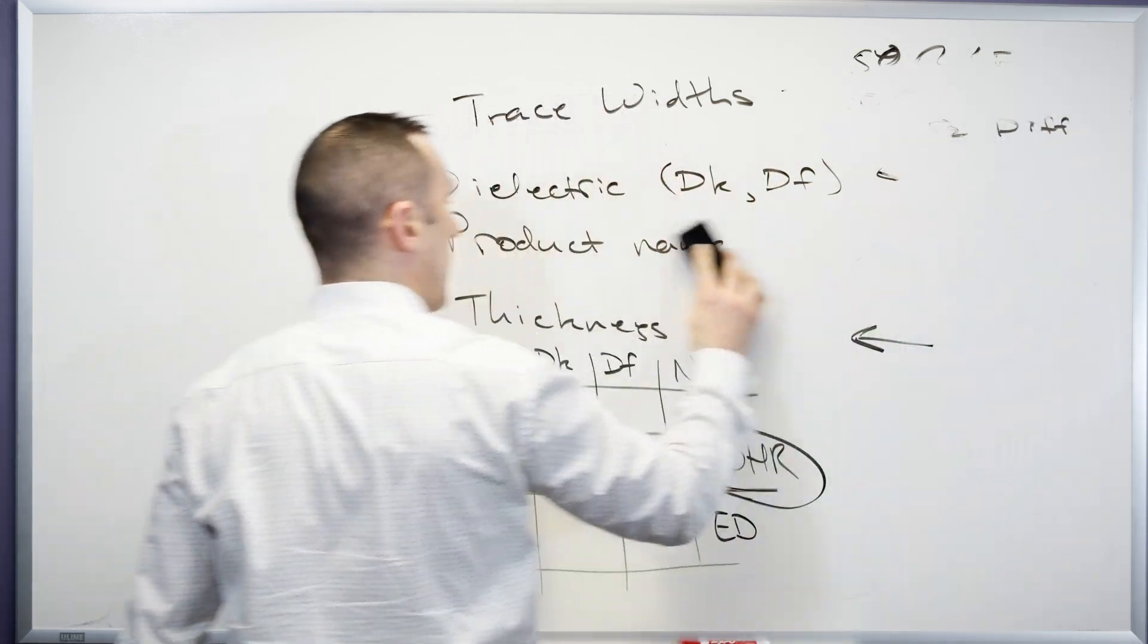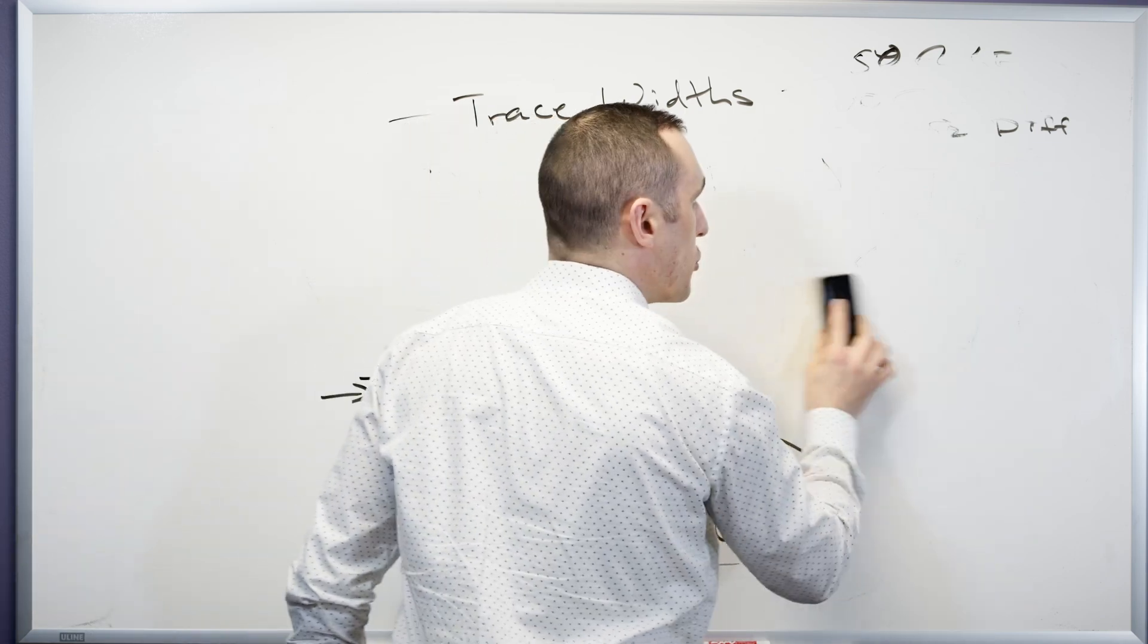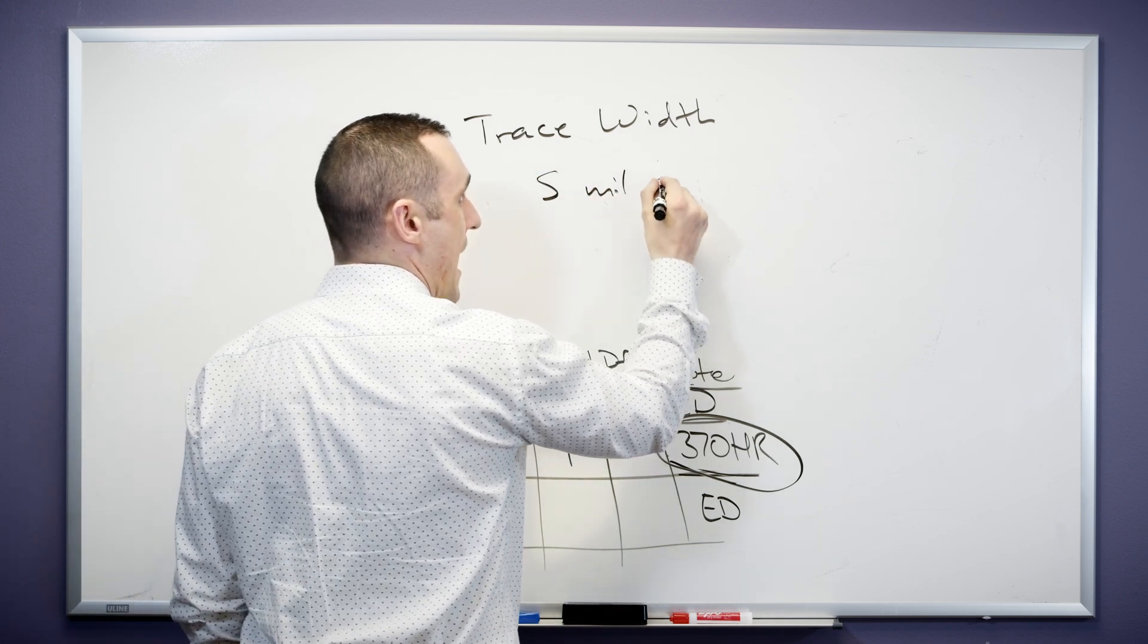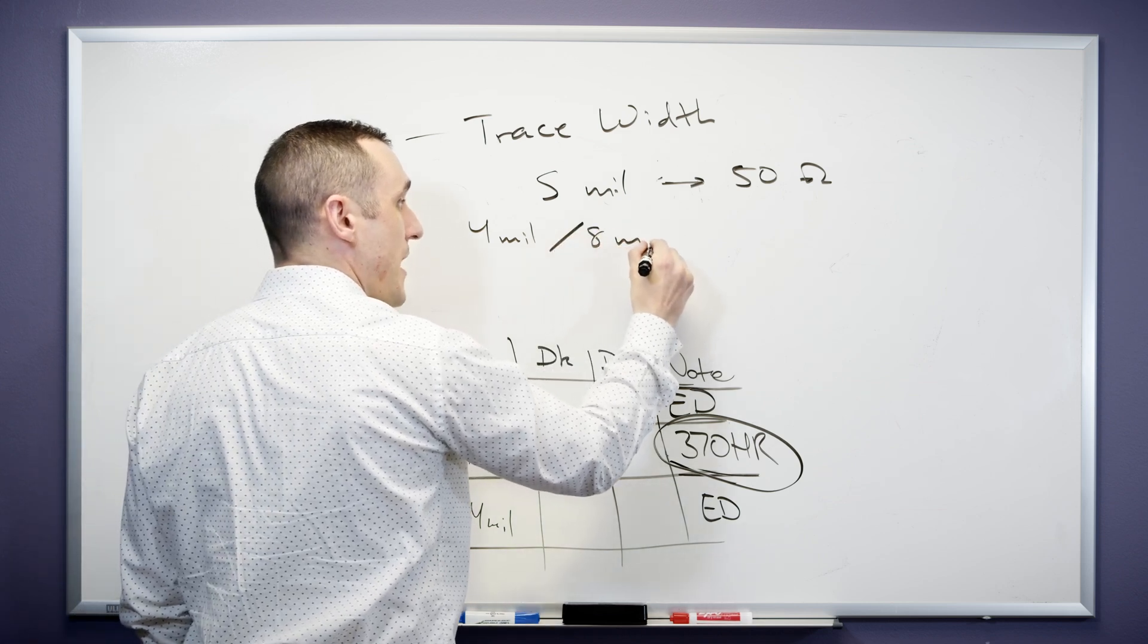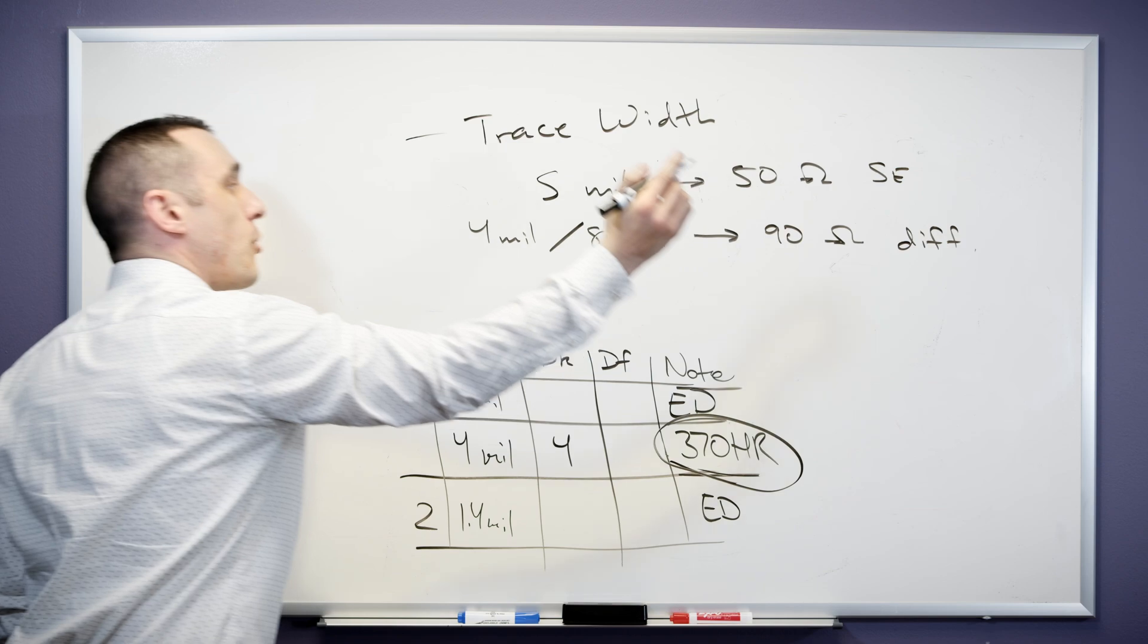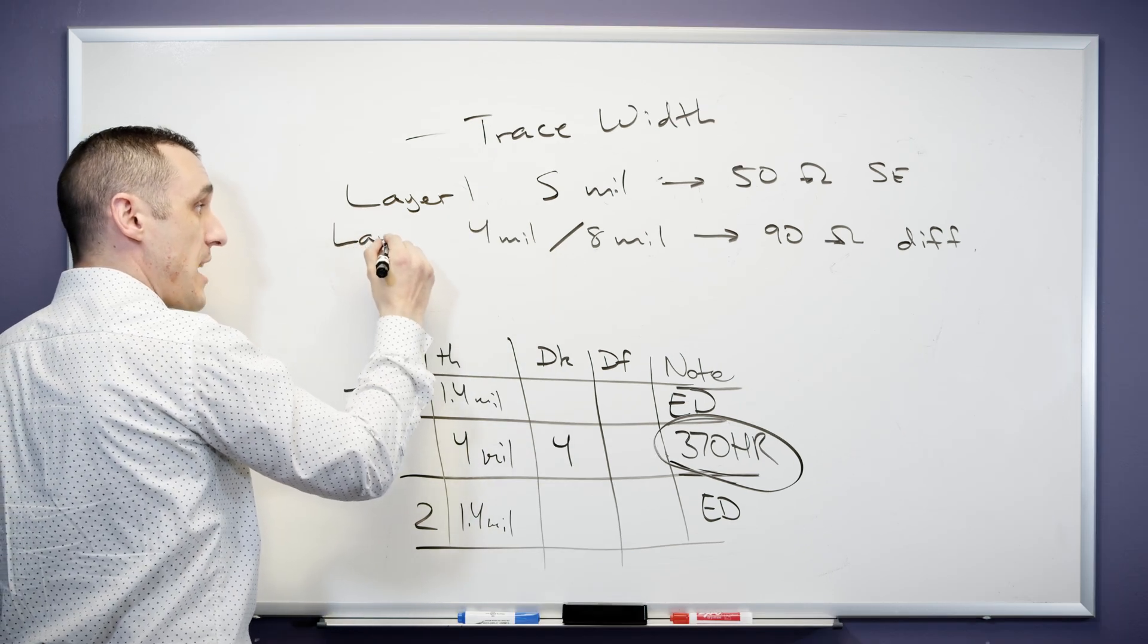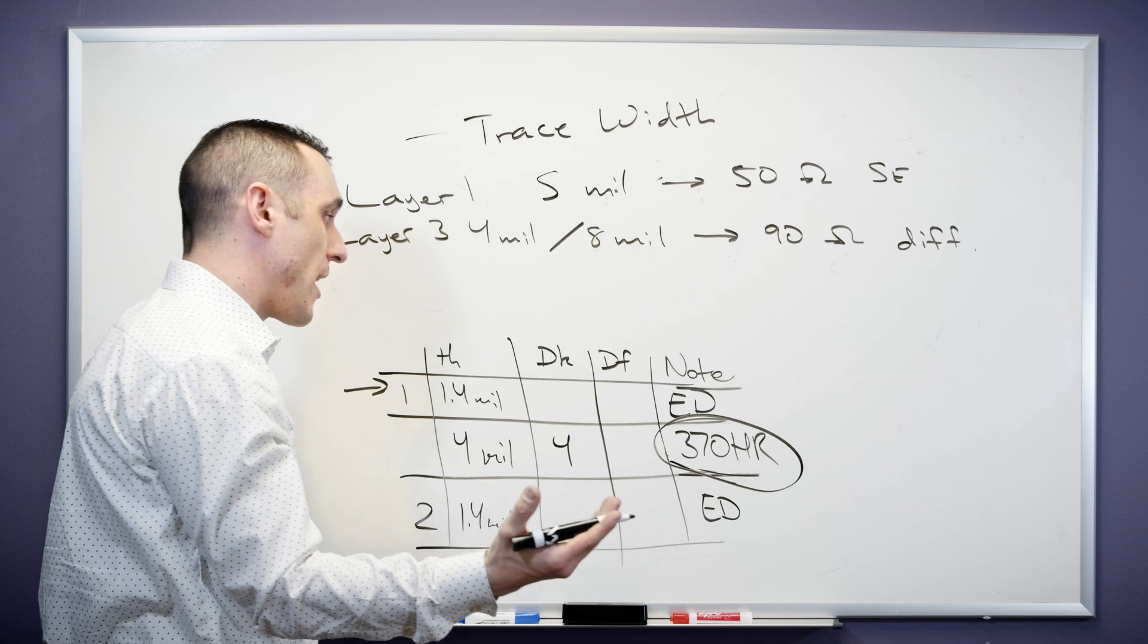Rather than specifying a specific product name and rather than specifying a particular dielectric constant, what we actually do is we specify a trace width for a given impedance target. So we basically say something to the effect of five mil traces need to have 50 ohm impedance. And we may say something to the effect of four mil wide traces slash eight mil spacing need to have 90 ohm impedance. So this would be single ended and this would be differential. So what we're doing is we're specifying this on particular layers. For example we may specify this five mil requirement on layer one. We might specify this four mil eight mil requirement on layer three and so on.